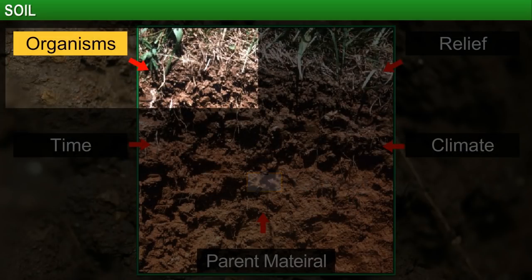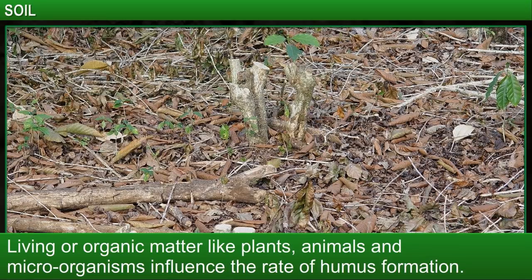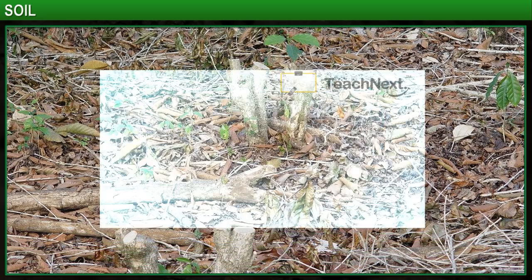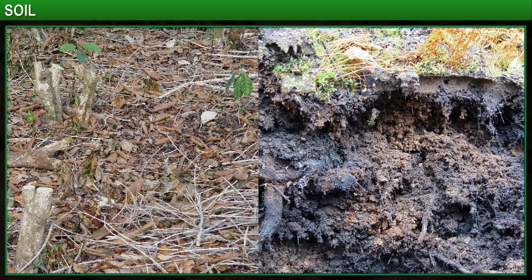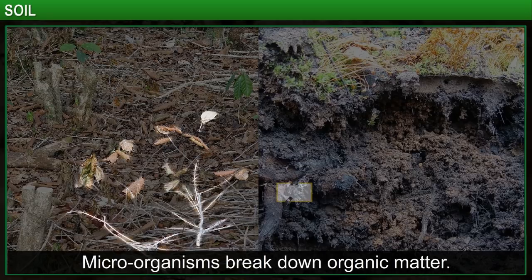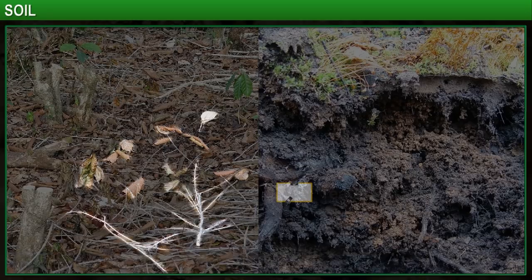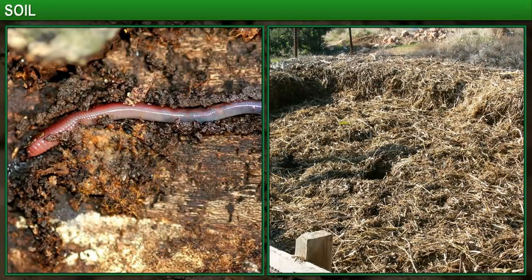Organic matter like plants, animals, and microorganisms influence the rate of humus formation. Humus is the degraded organic material in soil and helps increase its fertility. Dead plants fall on the surface of the soil and decay. The process of decomposition is helped by microorganisms that break down the organic matter when they feed on it. Animals such as the earthworm leave their excreta in the soil, which helps to make the humus richer.